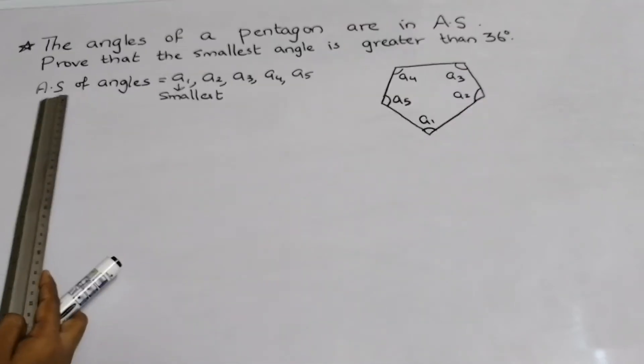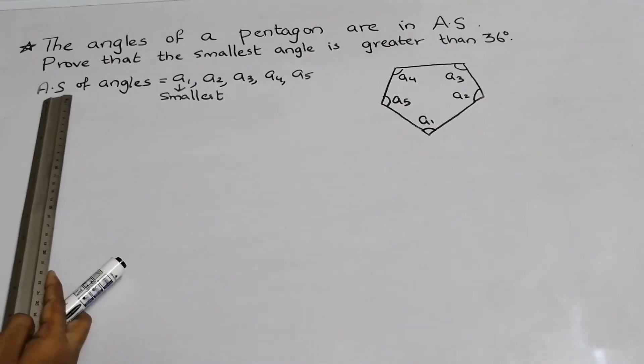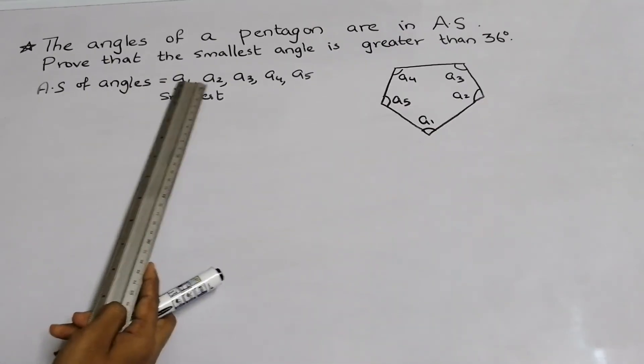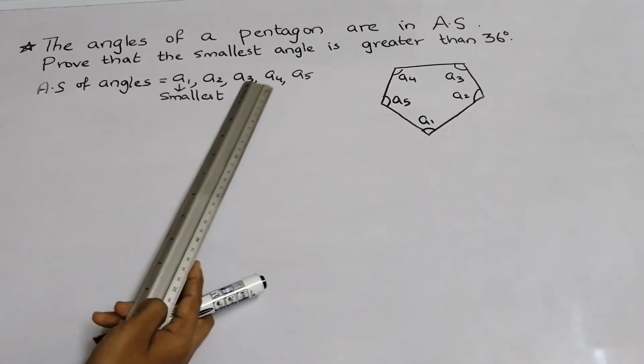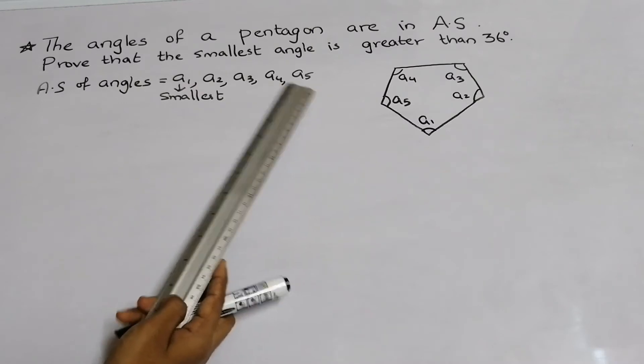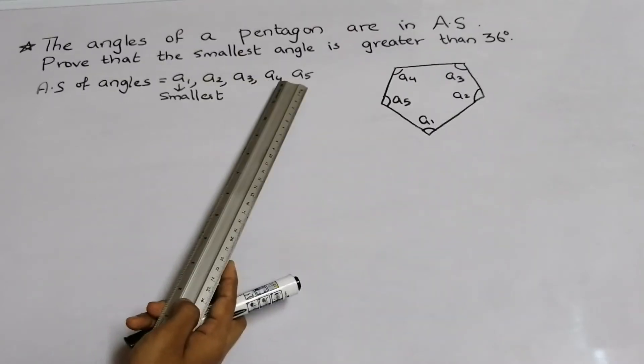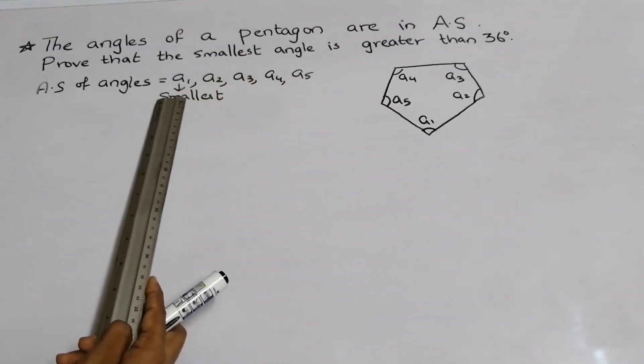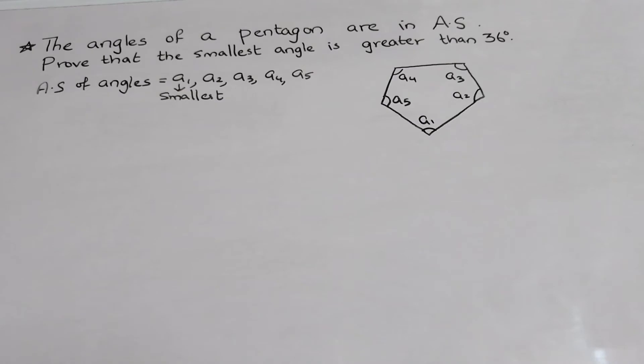I wrote the arithmetic sequence of angles as A1, A2, A3, A4, A5 — in order — and considered A1 as the smallest angle.